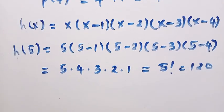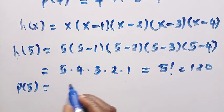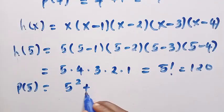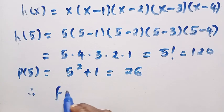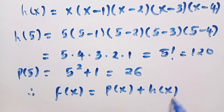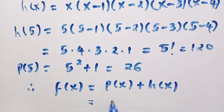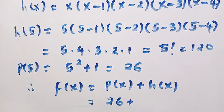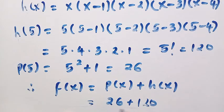How can we now pair this together? But before that, I want to know what is p of 5. p of 5 is given as x squared plus 1, that is 5 squared plus 1, and 5 squared plus 1 equals 26. Therefore, in general terms, for every f of x, this will be equal to p of x plus h of x. f of x equals p of x plus h of x. What is p of x? That is 26 plus our h of x, which is given as 120. By adding 120 plus 26, we are going to get 146.